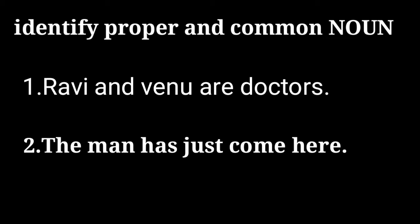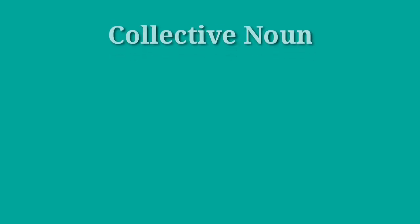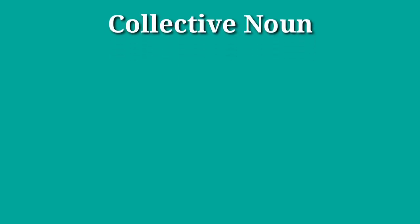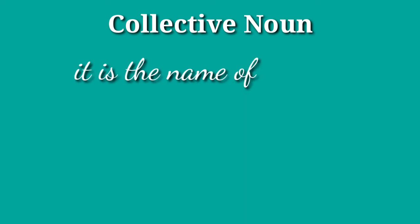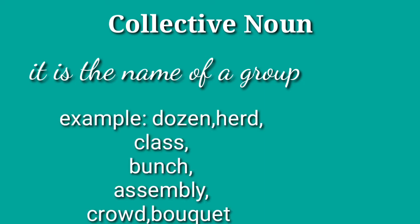The third one is collective noun. A collective noun is the name of a group — it refers to one group. For example, 'dozen' — dozen is the name for a group of everyone.